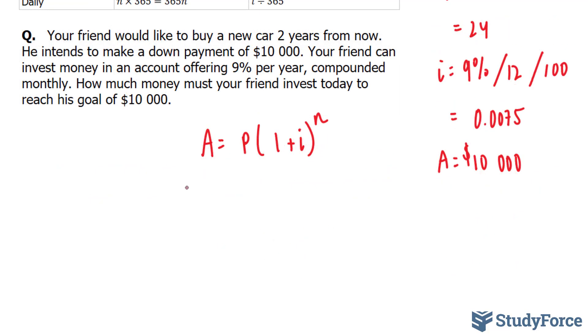Our A value was determined to be 10,000. The P is what we're looking for. 1 plus 0.0075 to the power of 24.